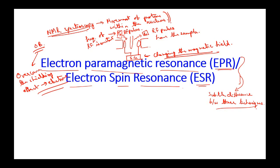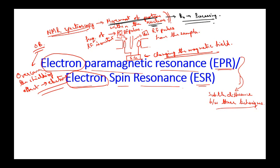In the current lecture, as the name suggests — electron paramagnetic resonance or electron spin resonance — we will basically be looking into the electrons and their movement. In NMR spectroscopy we were looking at the movement of protons within the nucleus under a stable magnetic field B0. However, if you consider an atom, there is a nucleus and there are electron orbits, and the movement of protons and electrons differs.